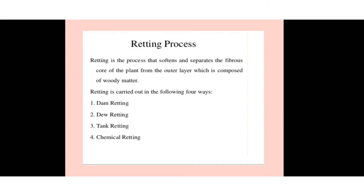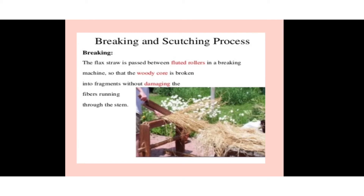The retting process softens and separates the fiber core of the plant from the outer layer composed of woody matter. Retting is carried out by four methods: dew retting, water retting, tank retting, and chemical retting. In the breaking and scutching process, the flax straw is passed between fluted rollers in a breaking machine so that the woody core is broken into fragments without damaging the fibers running through the stem.